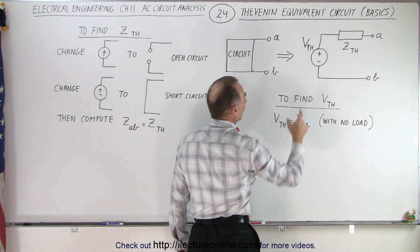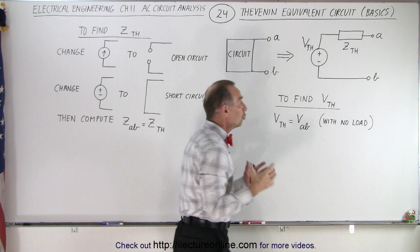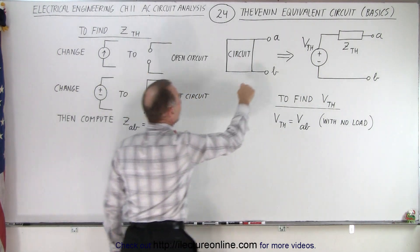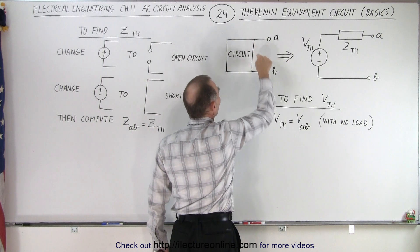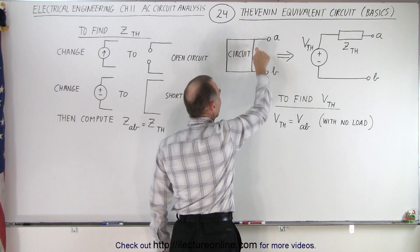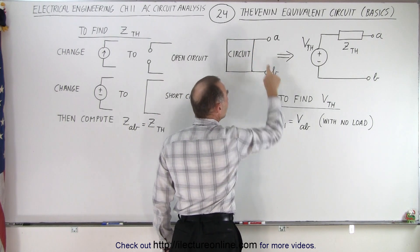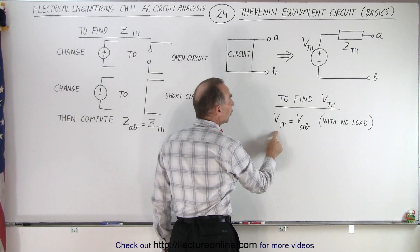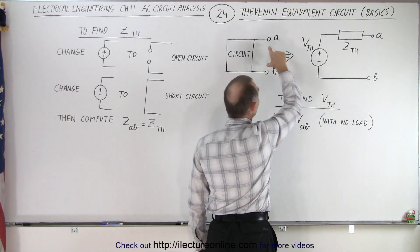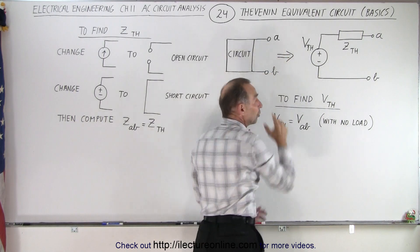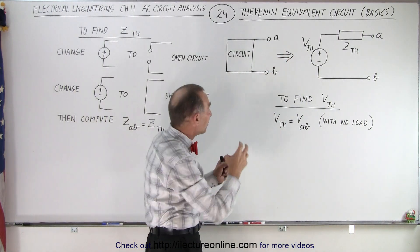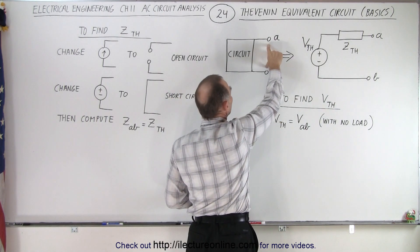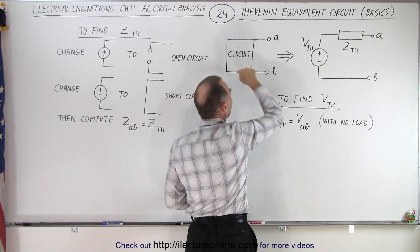The next thing you want to do is find the Thevenin voltage. To do that you restore your circuit to the original and you simply calculate what the voltage is between the two terminals from A to B. The voltage between A and B with the circuit restored is simply the Thevenin voltage. Of course you want to have no load between A and B. So if there's something connected between A and B you simply want to remove that and then calculate the voltage between A and B through the regular circuit.